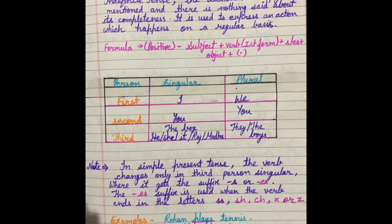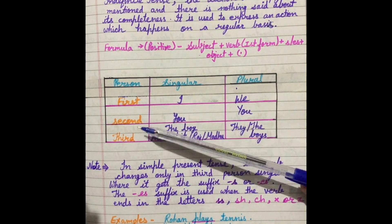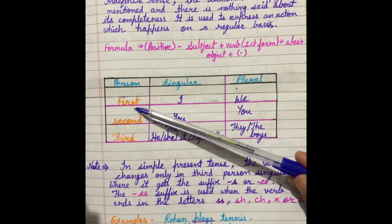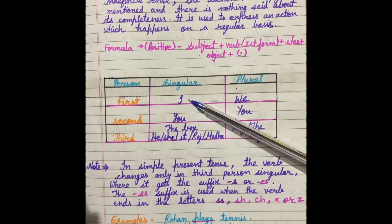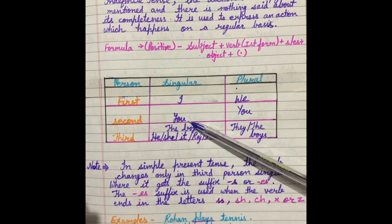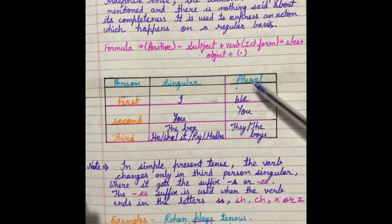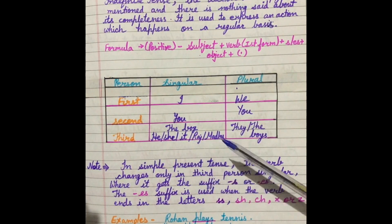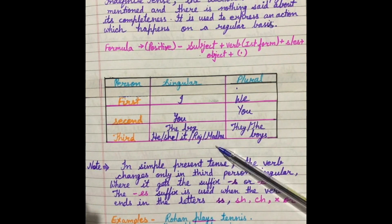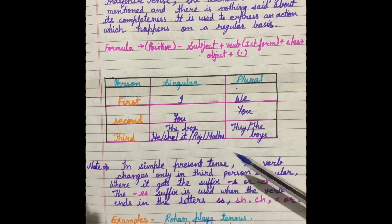First, we have to know that there are three types of person. First person: singular I and plural we. Second person: we use you, and in plural also we use you. Third person: the boy, he, she, it, Raj, Madhu. If any name is given, then that is third person. In plural third person: they and the boys.